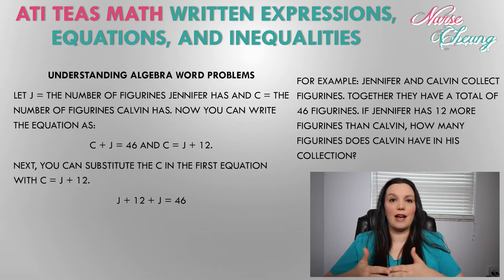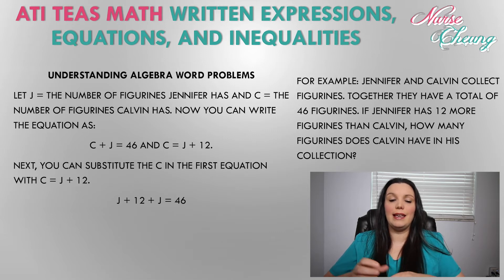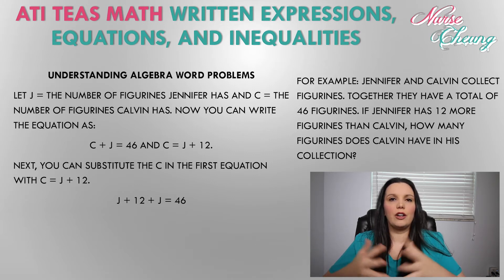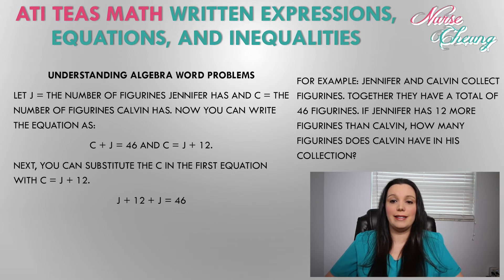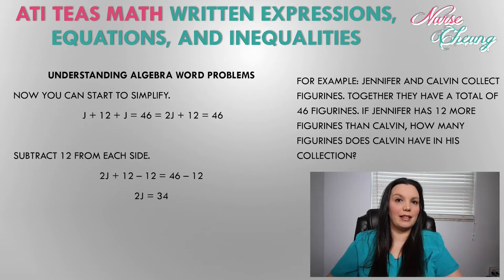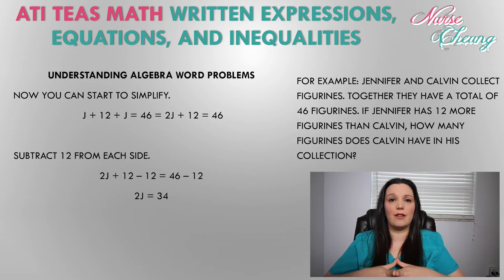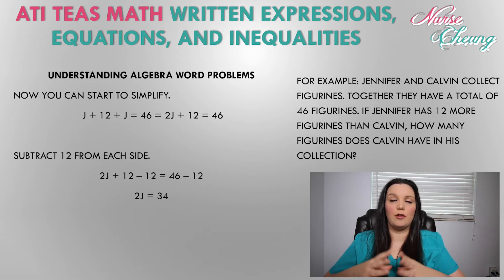We're going to let j equal the number of figurines Jennifer has and c equal the number Calvin has. We can write the equation as c plus j is equal to 46. We also know that Jennifer has 12 more than Calvin, so we write j equals c plus 12. We substitute j plus 12 for c in the first equation, giving us j plus 12 plus j equals 46. Combining like terms, we get 2j plus 12 is equal to 46.